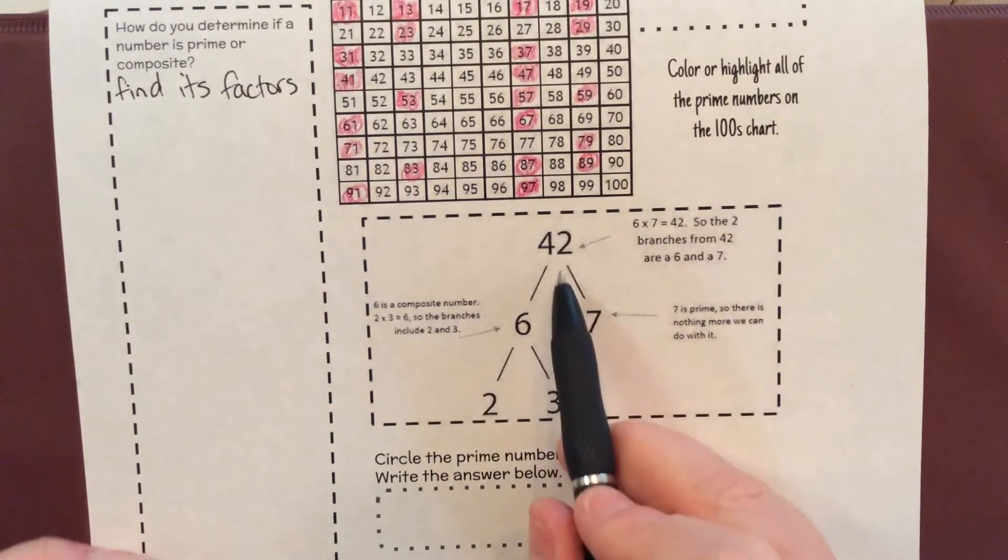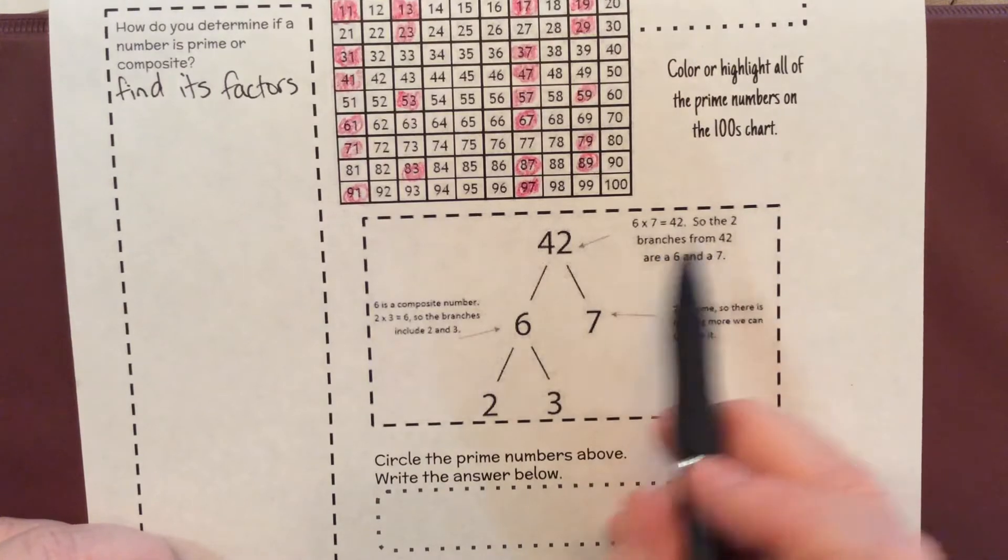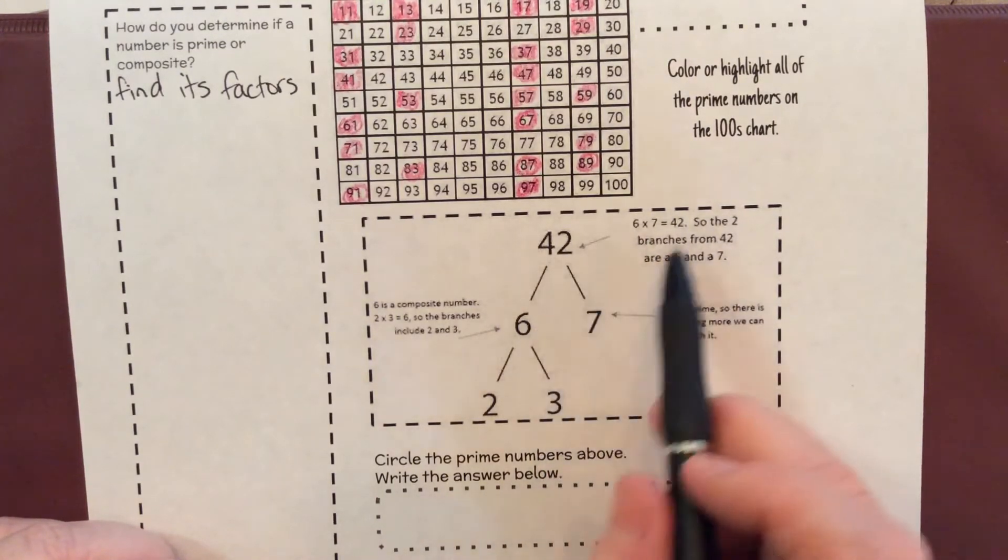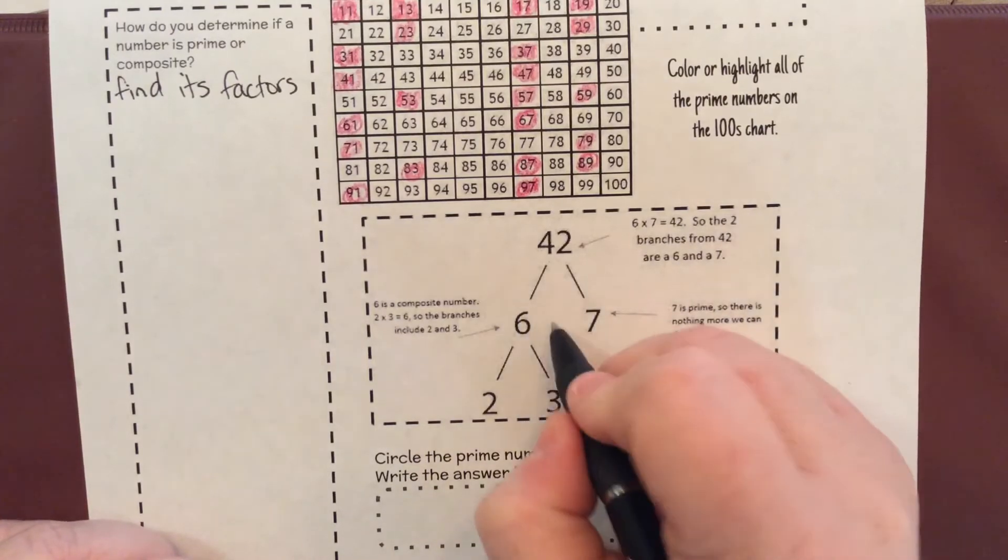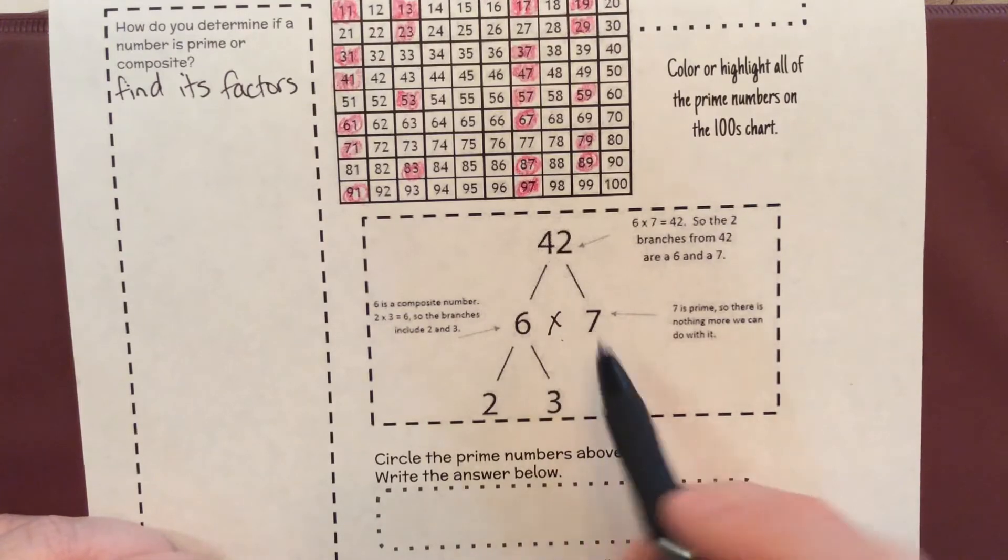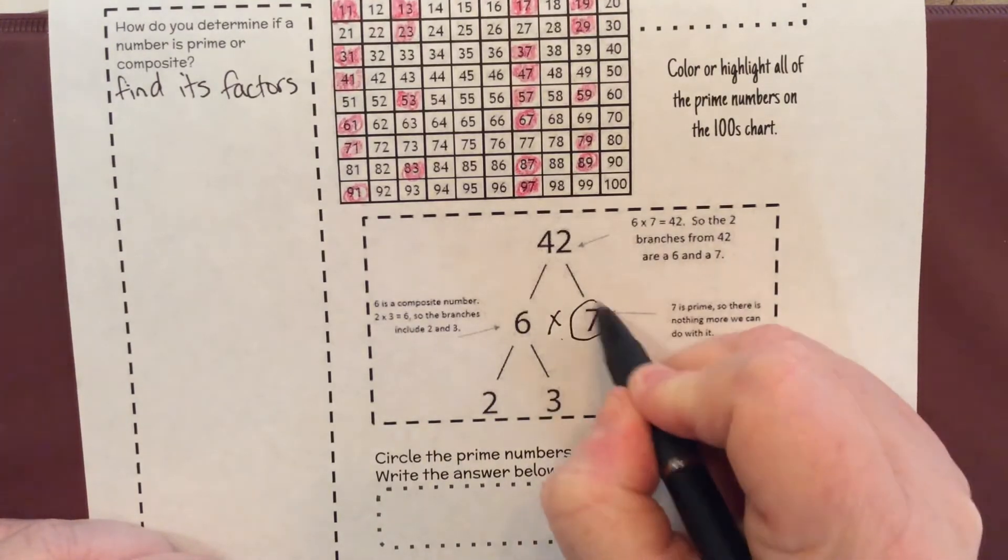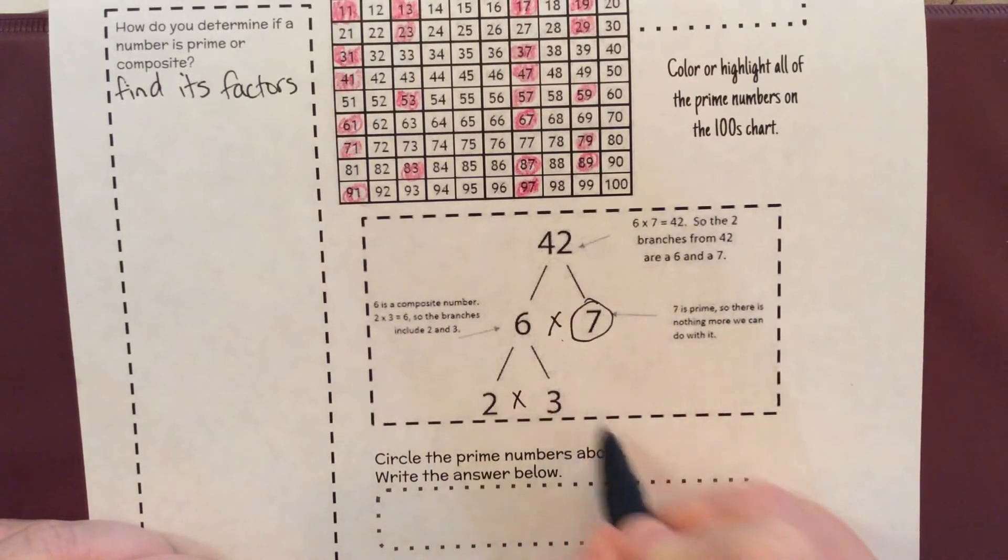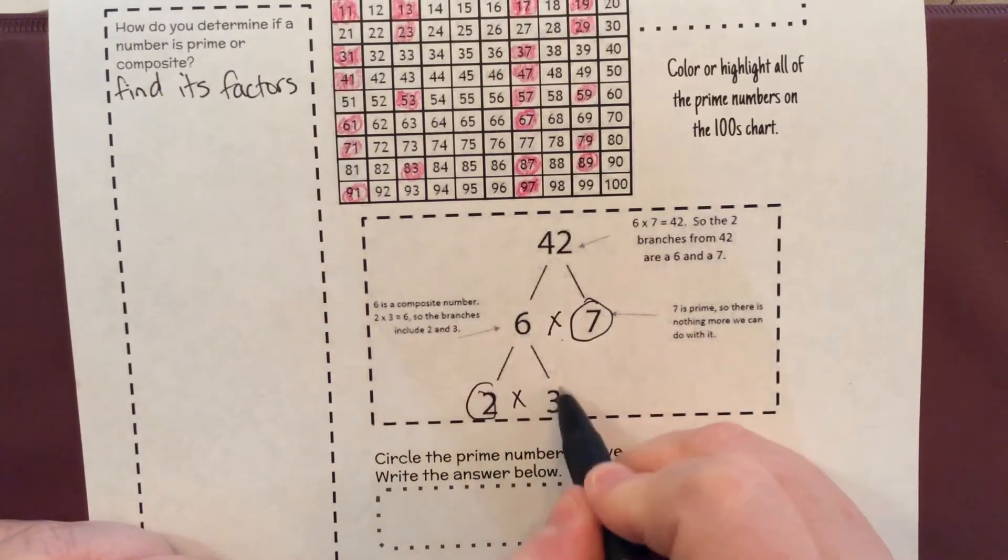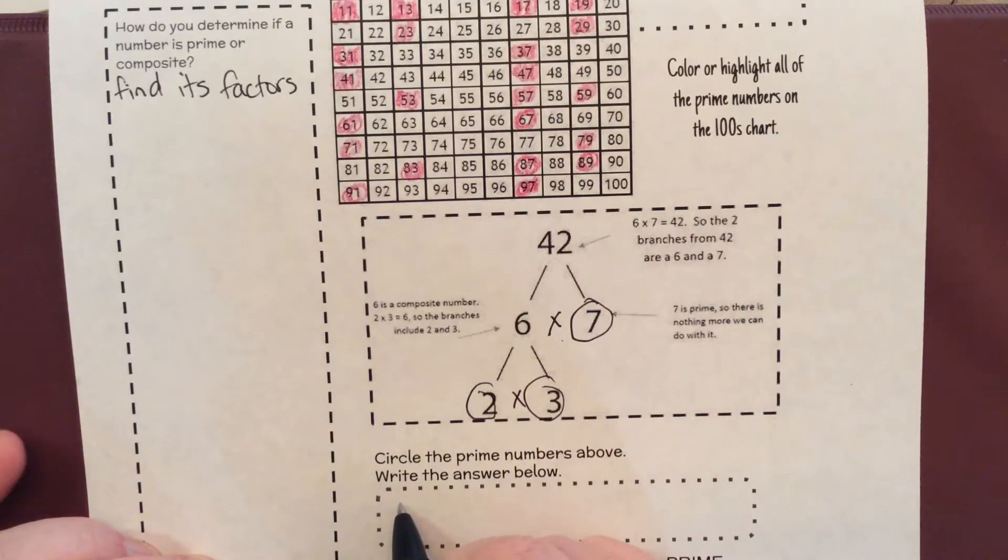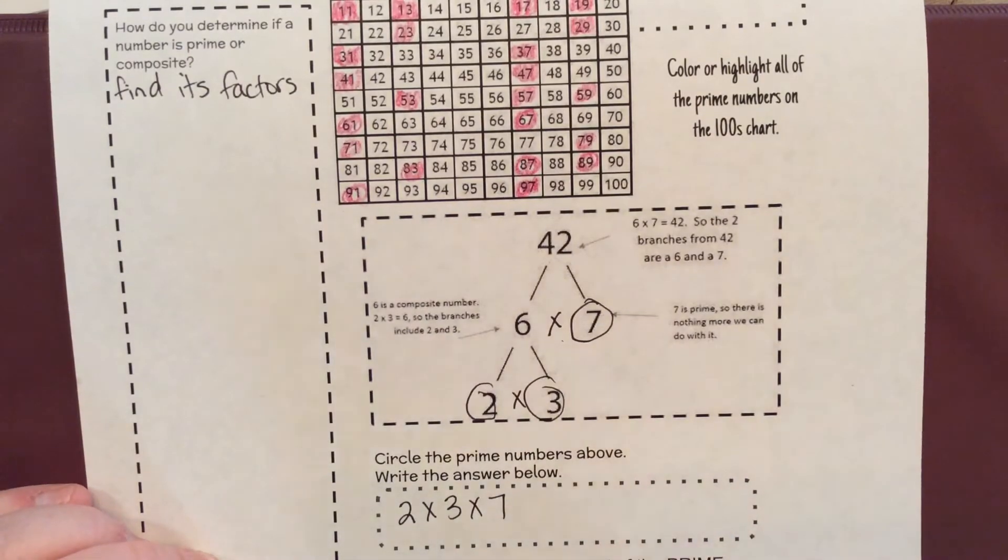So when you make a factor tree, we start with what multiplies to go into it. So 42 is made up of six times seven. The two branches here are six times seven. I always put a multiplication symbol in the middle. And then seven is prime, so I circle it. Six is composite because two times three equals six. Now two and three are prime. So we're going to write the prime numbers from up here. We're going to write two times three times seven.